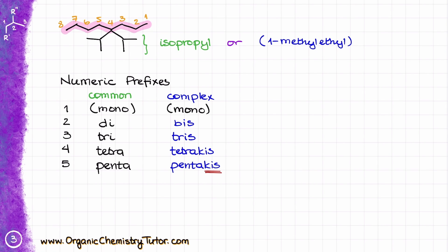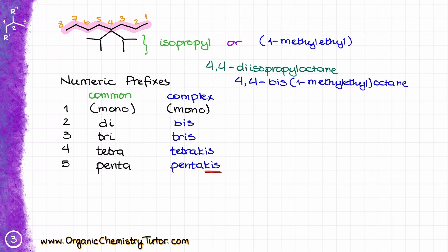Which naming you use really depends on which type of nomenclature you're applying. Using the common retained name, the name for this compound is 4,4-diisopropyloctane. However, using strict IUPAC rules, it becomes 4,4-bis(1-methylethyl)octane. For exam purposes, make sure you check with your instructor — in my experience most instructors are fine using the common retained names for the first four substituents, such as isopropyl, isobutyl, or tert-butyl. However, some instructors are strict about IUPAC rules, so use complex nomenclature if required.